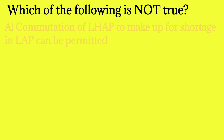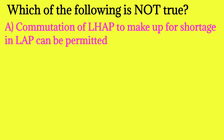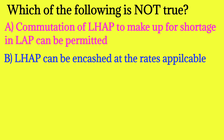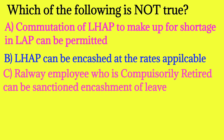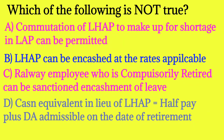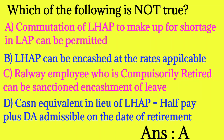Which of the following is not true? Option A: commutation of LHAP to make up for shortfalls in LAP can be permitted. Option B: LHAP can be encashed at the applicable rates. Option C: a railway employee who is compulsorily retired can be sanctioned encashment of leave. Option D: cash equivalent in lieu of LHAP is equal to half pay plus DA admissible on the date of retirement. Statement A is not true — that is the answer.